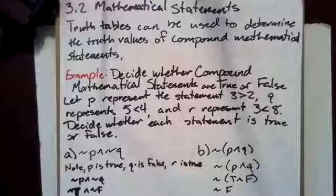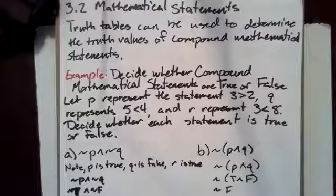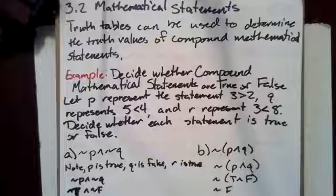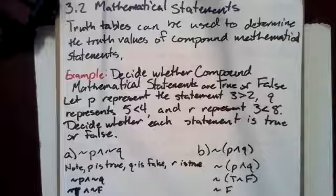Our first statement is not P and not Q. P is true, Q is false, and R is true. So not P and not Q is not true and not false, which is false and true. So that's false.